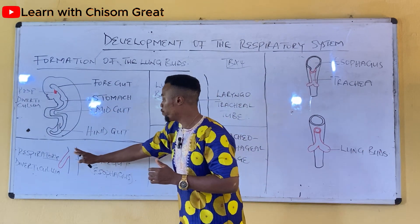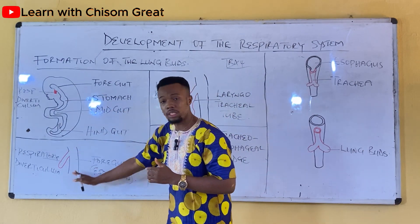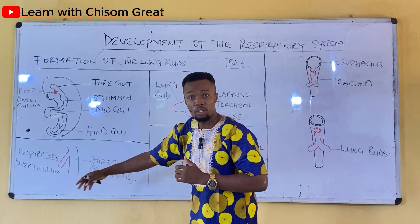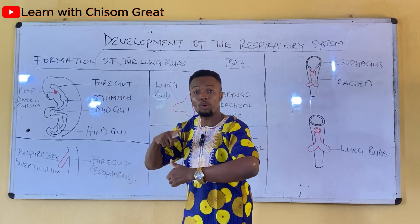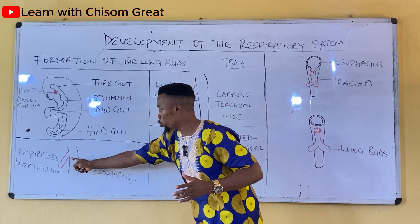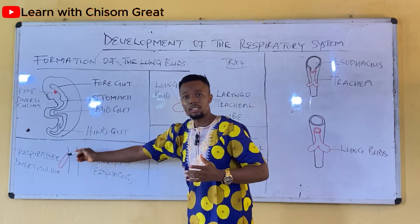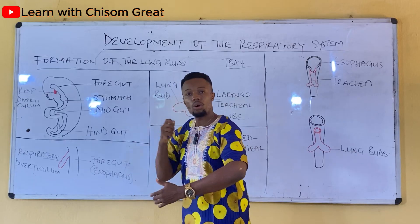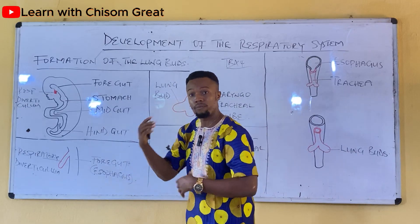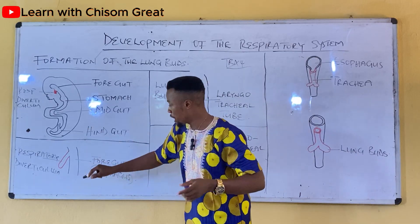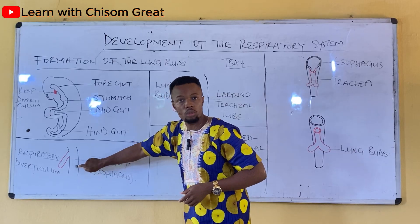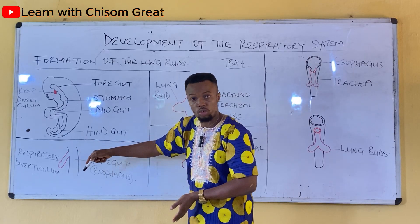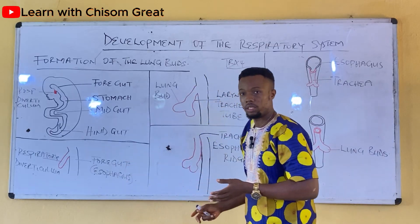The respiratory diverticulum begins to elongate — it begins to grow in size and in length. You can see how the cells are proliferating faster. At the same time, this part of the foregut is forming the esophagus.